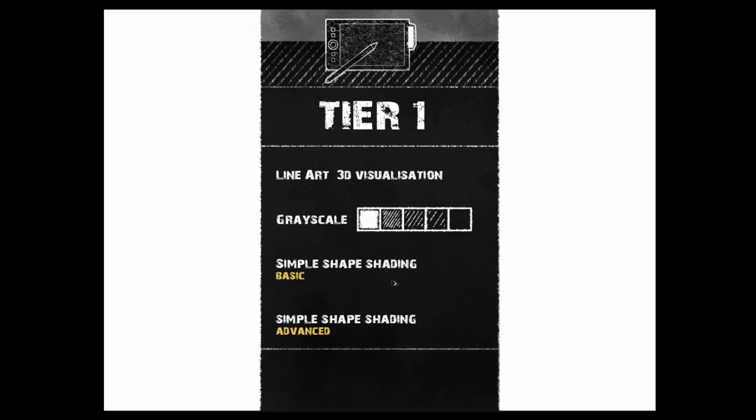The next step is advanced shape shading. We're gonna take whatever we've done in the basic and apply some more theory to it — something like more light, different shades of grey. Shadow isn't just dark grey on one side; usually light bounces all over the place, so it's not shaded the same all over the cube or the sphere. So we're gonna bring it up. That's tier 1 — this is what we'll be doing.